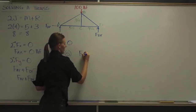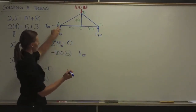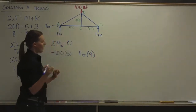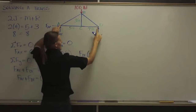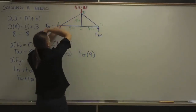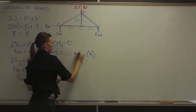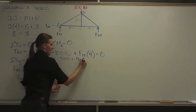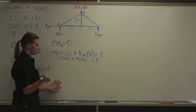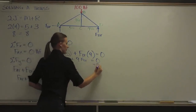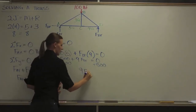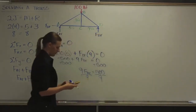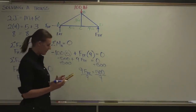For F-D-Y, its line of action is 9 units away from A. Pushing at F-D-Y would cause the truss to rotate counterclockwise — that's positive. So: negative 100 times 5 plus 9 times F-D-Y equals zero. Simplifying: negative 500 plus 9 F-D-Y equals zero. Adding 500 to both sides gives 9 F-D-Y equals 500. Dividing by 9, F-D-Y equals 55.6 pounds of force.